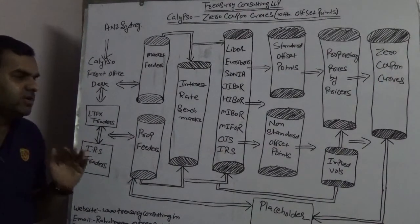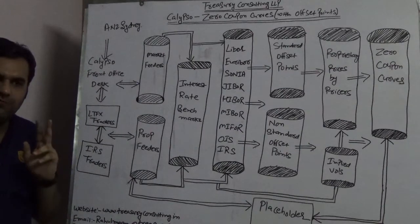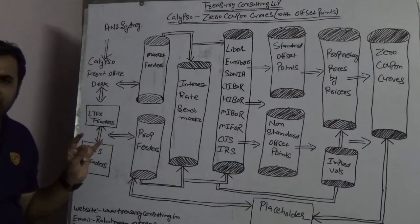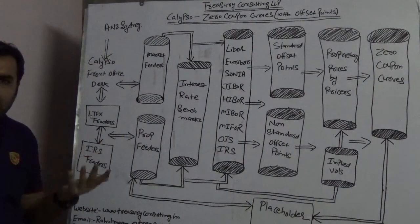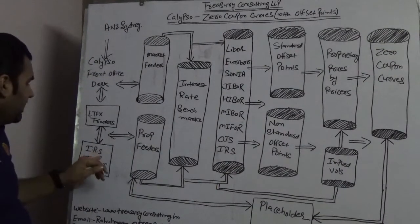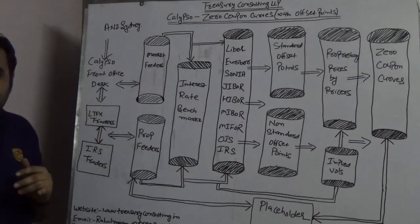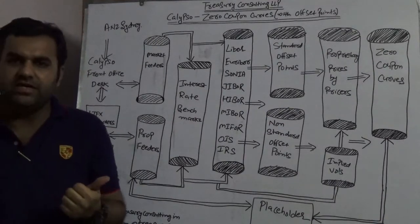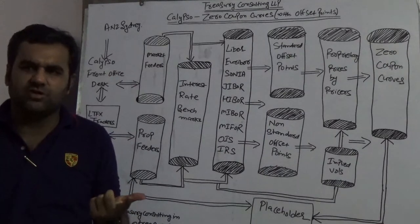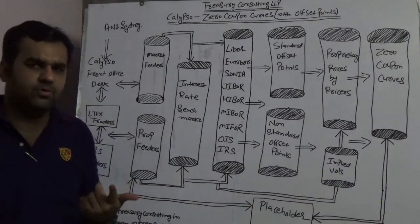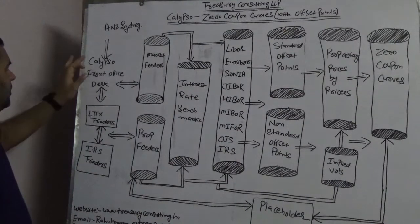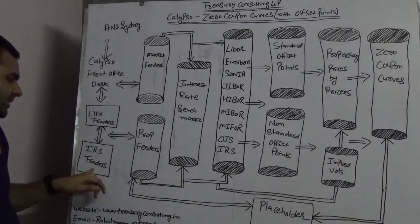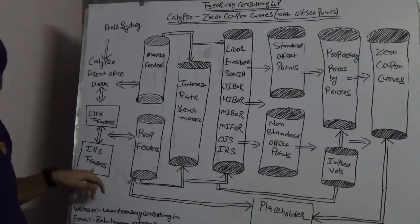When we talk about zero coupon curves, we need to understand two kinds of traders. Trader number one is the LTFX trader — Long Term Foreign Exchange — those dealing in longer term contracts, more than one year by official definition. The second is the IRS trader, Interest Rate Swap trader. To an extent, NDF traders also play a very important role here.